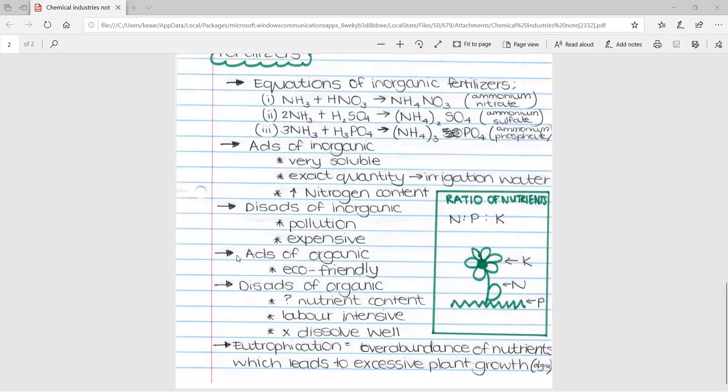Then because we've done advantages and disadvantages of inorganic, we must compare them to our organic fertilizers. So the biggest advantage and probably the only advantage of organic fertilizers is that it's eco-friendly. But this is a very big advantage and that is why many people use organic fertilizers.